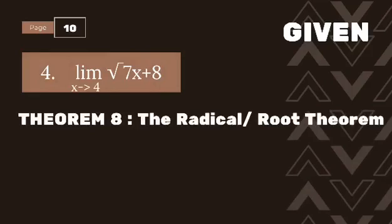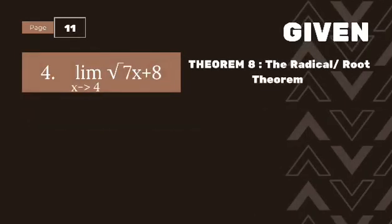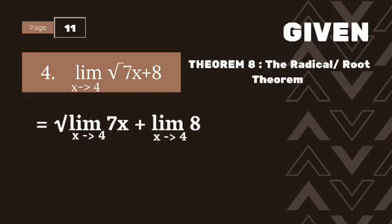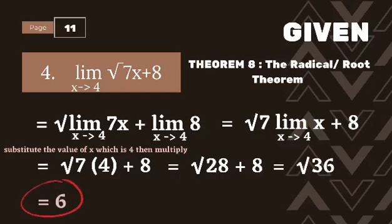The theorem used in number four is Theorem 8, the Radical or Root Theorem. We evaluate the limit of the square root of 7x plus 8 as x approaches 4. First, separate the expression: we get the square root of the limit of 7x as x approaches 4, plus the limit of the constant 8 as x approaches 4. Then separate 7x: square root of 7 times the limit of x as x approaches 4, plus the limit of 8. Simplifying: square root of 28 plus 8 equals square root of 36, which equals 6. Therefore, the limit of the square root of 7x plus 8 as x approaches 4 is 6.